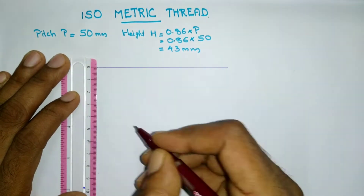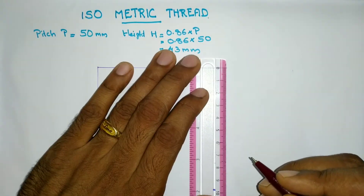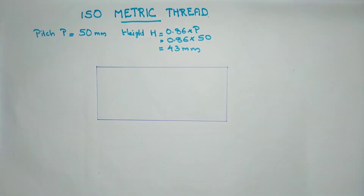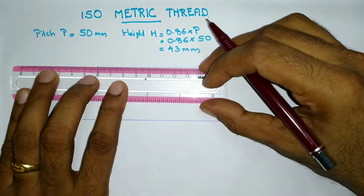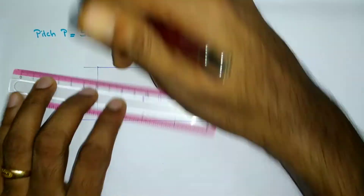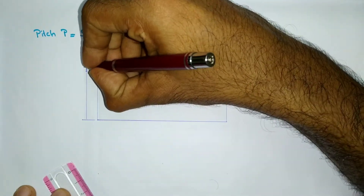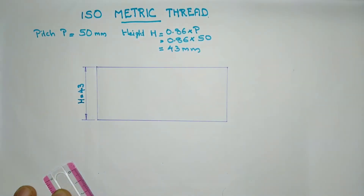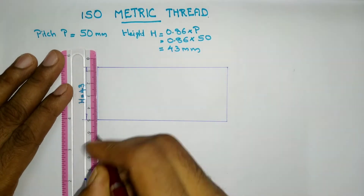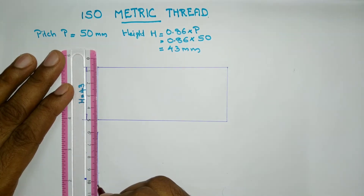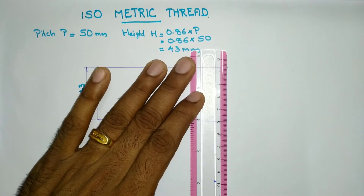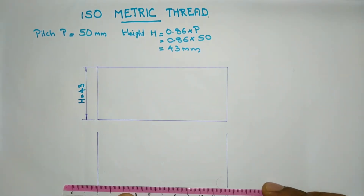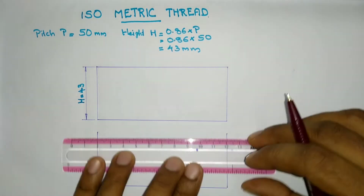Draw a rectangle with its width equal to double the pitch, i.e., 100 mm, and height h equal to 43 mm. This rectangle is for drawing the internal thread. Below that, draw another rectangle with the same dimensions for the external thread.